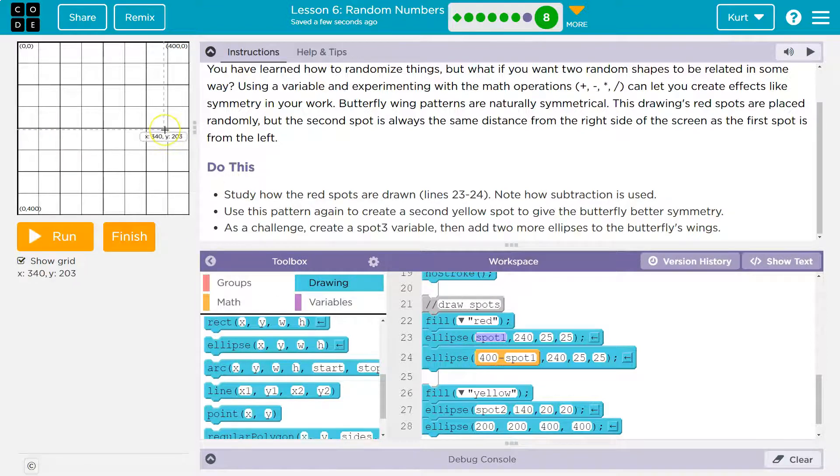Now, what number is X on the right side of the screen? Well, X over here is 400. So if I want it 50 away from the right side of the screen, then I would have to take 400 minus 50. I would add 50 to get it 50 away from the left side of the screen. I would subtract 50 to get it 50 away from the right side of the screen.